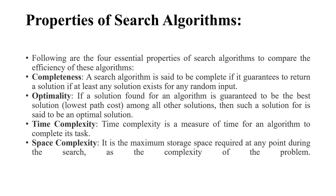The next two properties are time complexity and space complexity. Time complexity is the measure of time for an algorithm to complete its task. Space complexity is the maximum storage space required at any point during the search. These four are the properties of search algorithms.